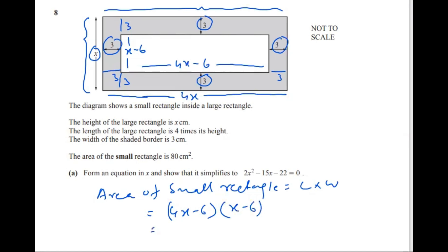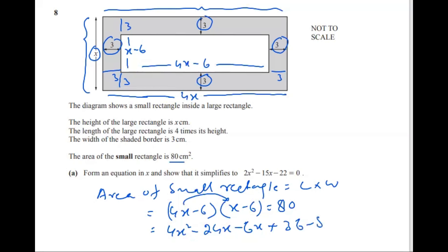The area of the small rectangle is length multiplied by width: (4x minus 6)(x minus 6), which should equal 80 centimeters square. Opening the brackets: 4x multiplied by x gives 4x squared; 4x multiplied by minus 6 gives minus 24x; minus 6x; and minus 6 times minus 6 gives plus 36. Shifting 80 to the left gives minus 80 equal to 0.